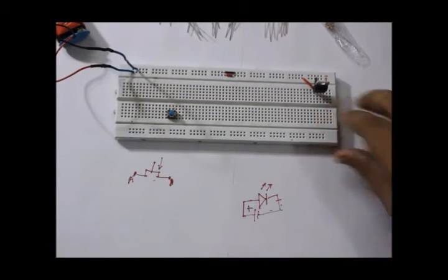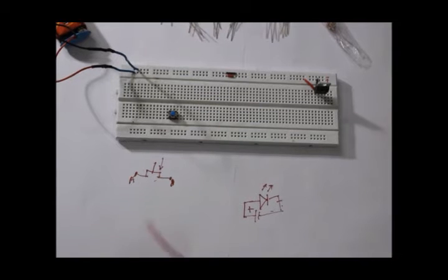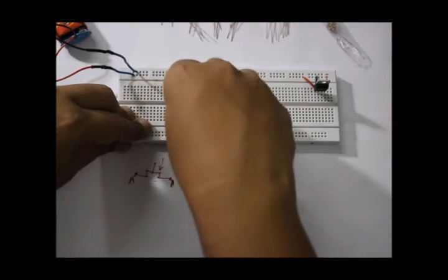Now this is a regulator. This regulates the 9 volt power to 5 volt. I will talk about it in later videos, maybe in the next tutorial. By this time ignore that part. I am taking the 5 volt output from this IC and connecting it to the micro switch.